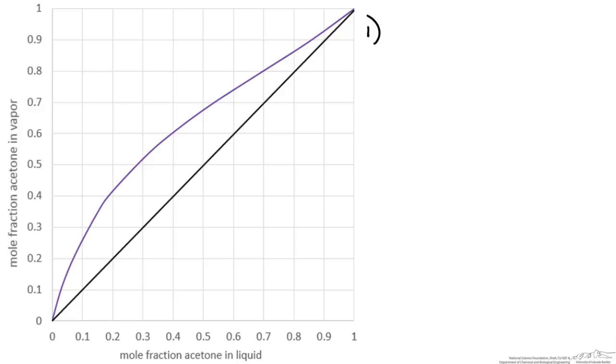The first thing you want to do is collect vapor liquid equilibrium data and plot the x versus y, or liquid versus vapor mole fractions of the more volatile species. In this case we have pressure at 101.3 kilopascals with mole fraction of acetone in the liquid and vapor plotted on this x-y diagram. I also have an x equals y line thrown into the plot. This will help us as we go through the McCabe-Thiele method.